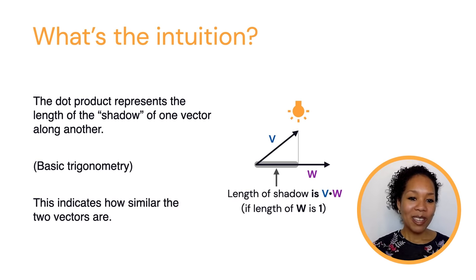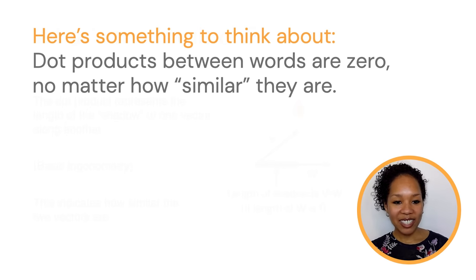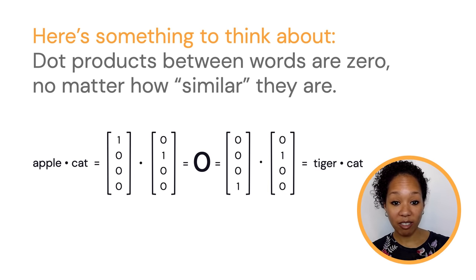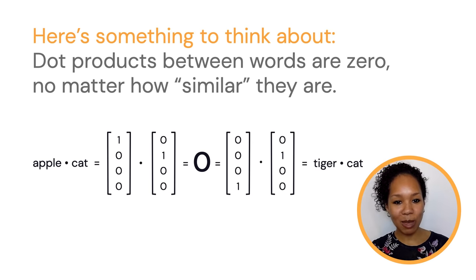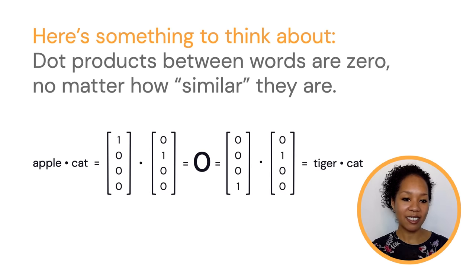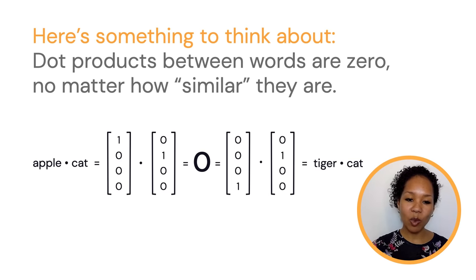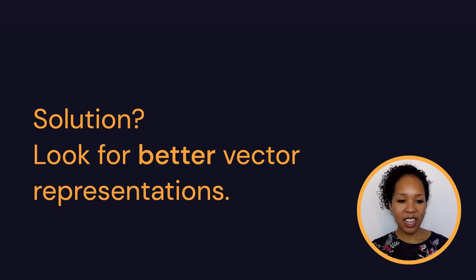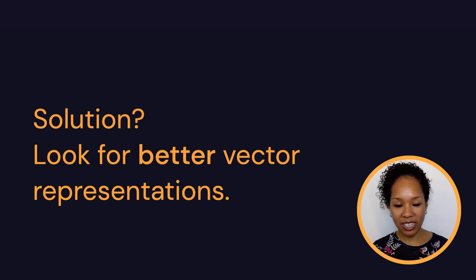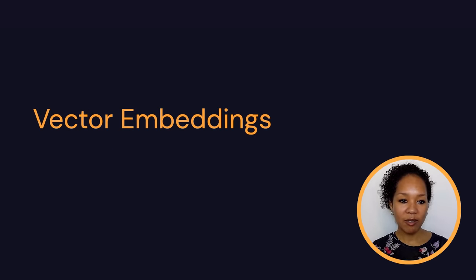So dot products measure similarity. Now you can see that if you take the dot product between one-hot encodings for apple and cat, you get zero — which maybe is okay because apples and cats aren't really related. But you also get zero if you take the dot product between tiger and cat, and maybe you don't want that, because you feel they're more similar than apples and cats. That's one of the drawbacks to these kinds of data representations, and it motivates the idea that we want to choose representations wisely — leading us to our second topic: vector embeddings.